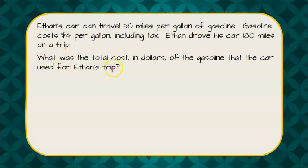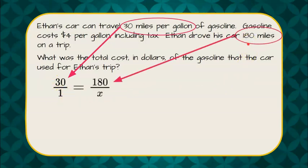What was the total cost in dollars of the gasoline that the car used for Ethan's trip? We know that he can travel 30 miles per gallon. That is a ratio, 30 miles for one gallon. We know he actually went 180 miles, and we want to know the number of gallons that he used to go 180 miles if he went 30 miles on one gallon.